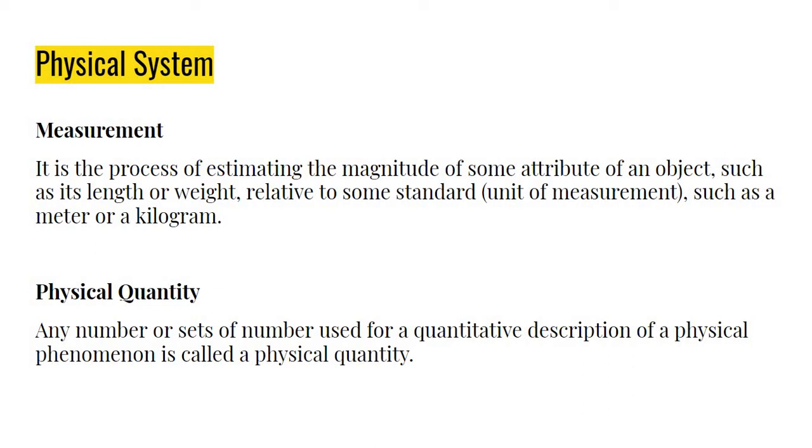Physical quantity. Any number or sets of numbers used for a quantitative description of a physical phenomenon. Any number that describes a physical quantity, or that is used for a quantitative description. For example, how tall are you? How would you describe that? How would you describe a man using its height? You should use a number and then with a unit. For example, five, six feet. Or, you say, 1.5 meters. That's the example of physical quantity.